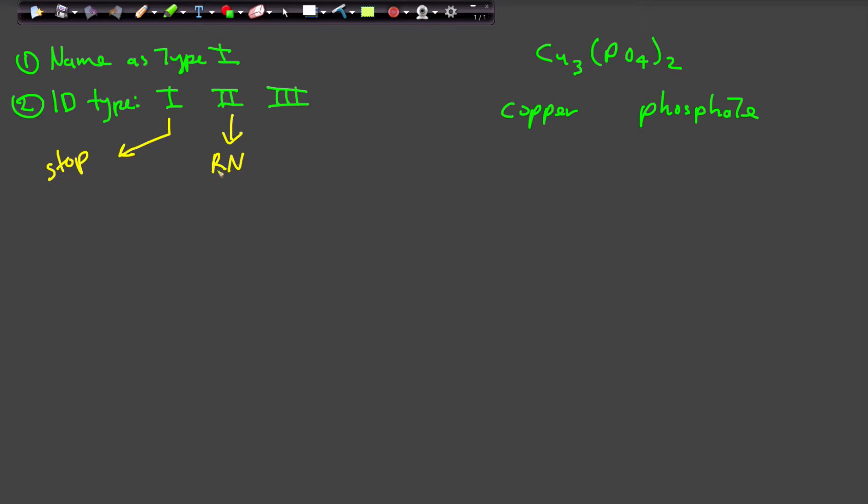You owe a Roman numeral to the name. You place parentheses. So the first thing I'm going to do then, now that I recognize this is a Type 2, the very first thing that I do is to place parentheses here.